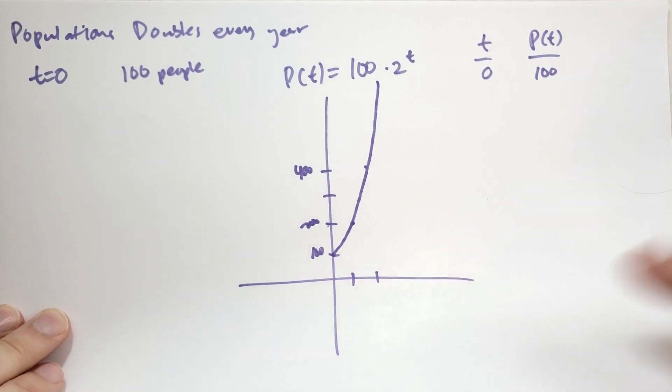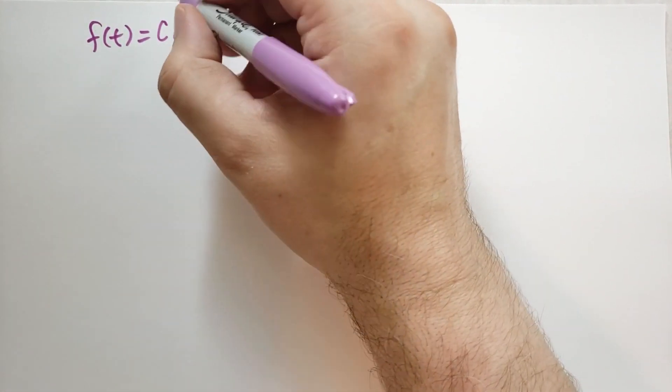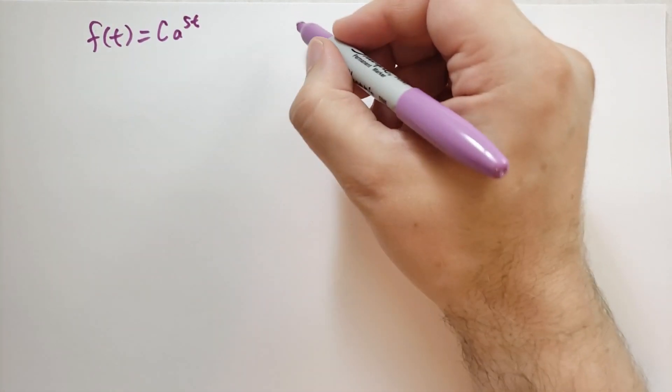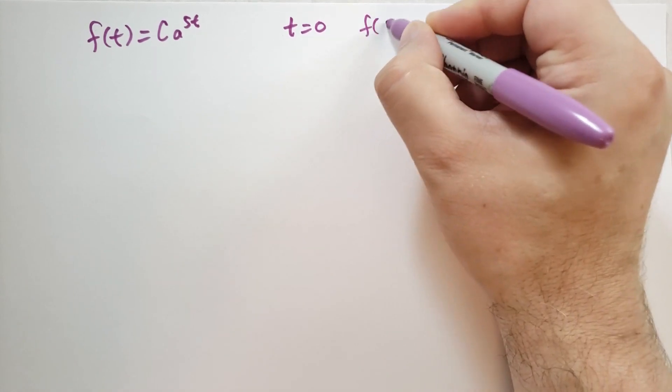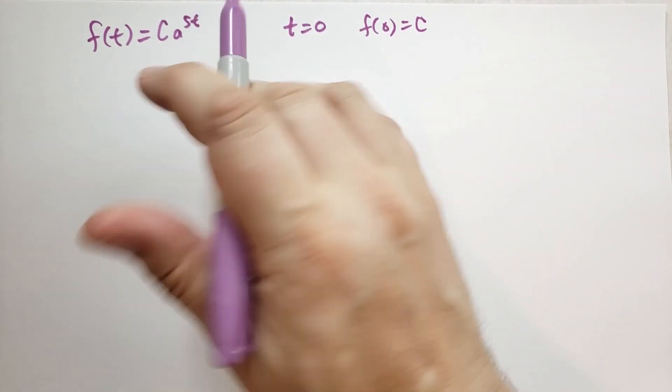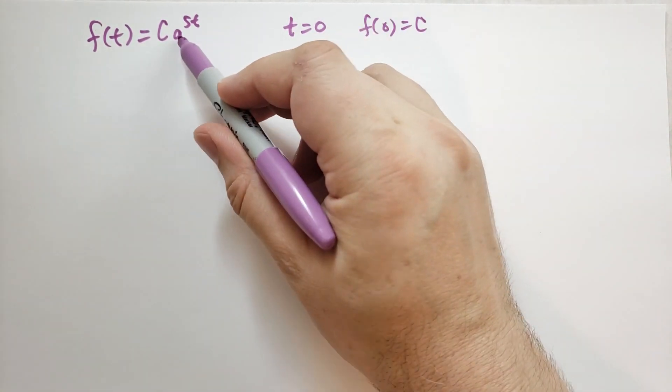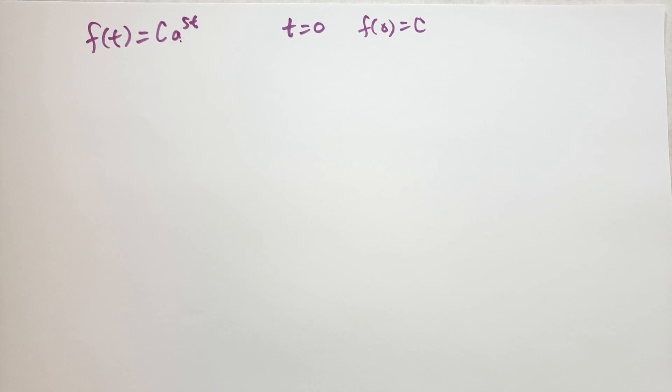Let's consider another example. In this example, we are going to calculate the function f(t) equals some constant C times some base a raised to the power of 5t. So at t equals 0, f(0) is going to be just C, because 5 times 0 is 0, and a^0 is 1. You can think of this as population growth. In this case, it's going to be fairly rapid population growth because of the factor of 5. These two numbers represent the larger they are, the faster this thing is going to grow. That's thanks to rule EXP4.